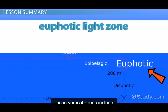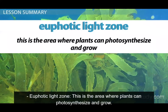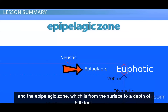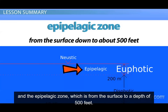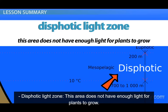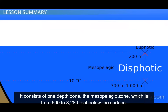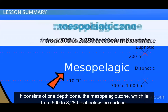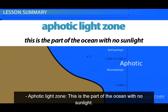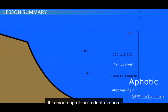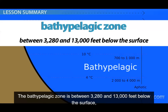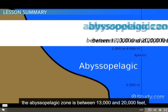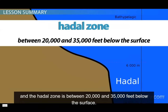The vertical zones include the euphotic light zone, where plants can photosynthesize and grow. It is made up of two depth zones: the neustic zone, which is the surface of the ocean, and the epipelagic zone, from the surface to a depth of 500 feet. The dysphotic light zone does not have enough light for plants to grow, and consists of the mesopelagic zone, from 500 to 3,280 feet below the surface. The aphotic light zone is the part of the ocean with no sunlight, made up of three depth zones: the bathypelagic zone, between 3,280 and 13,000 feet; the abyssopelagic zone, between 13,000 and 20,000 feet; and the hadal zone, between 20,000 and 35,000 feet below the surface.